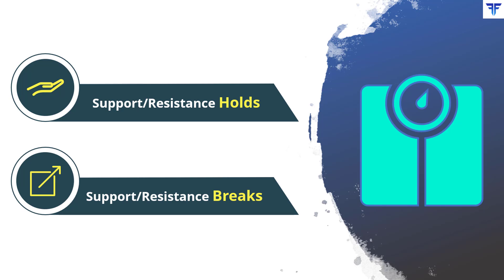As the price approaches a support or resistance, there is no way of telling whether that support or resistance will hold or break. Hence, one needs to patiently wait and monitor how the price behaves near a support or a resistance area. If the price reverses from the vicinity of the support or resistance, it indicates that the support or resistance has held. However, if a support or resistance is broken, then how does one assess the validity of that break?